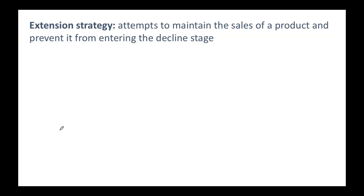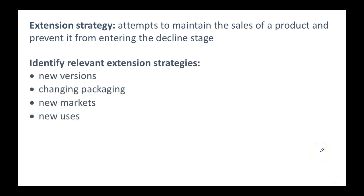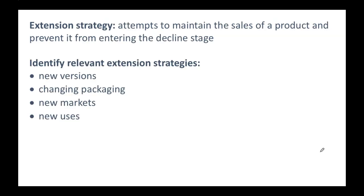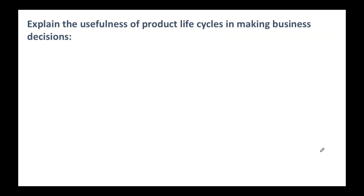An extension strategy is a common exam question that follows on from labelling the diagram and describing the stages. An extension strategy is any attempt to stop a product going into the decline stage — to maintain or maybe grow sales again. Examples include bringing out new versions, new packaging, trying to sell to new markets and new users, and adding new features. For example, Coca-Cola has had a very long product life cycle and from the 1980s started bringing out new versions — Diet Coke, Cherry Coke, Coke Zero — all extension strategies.